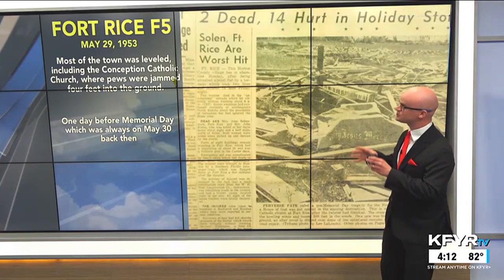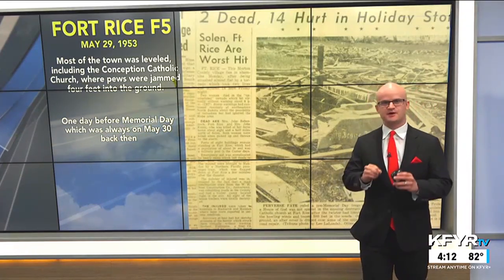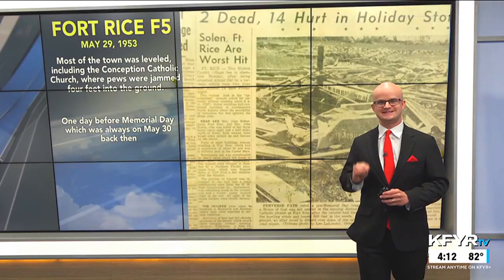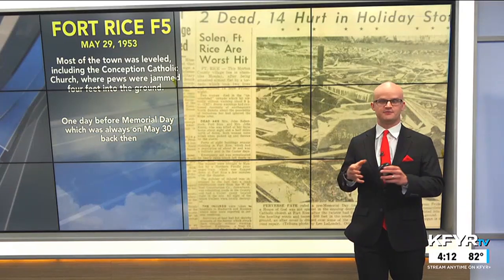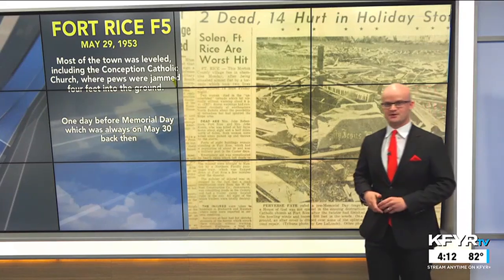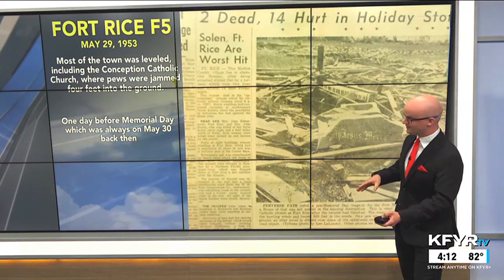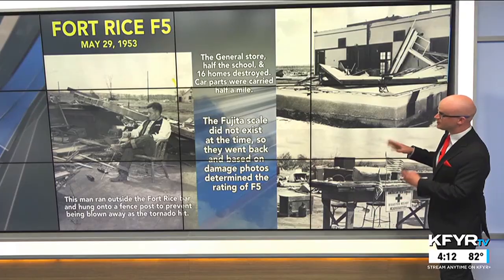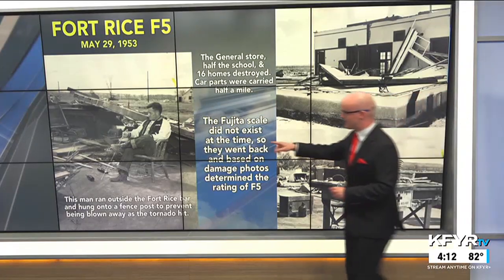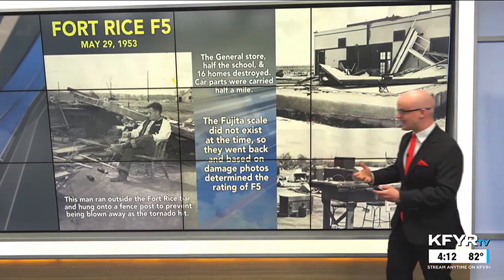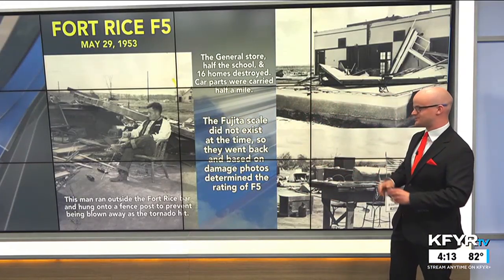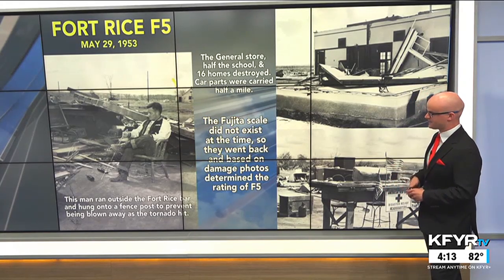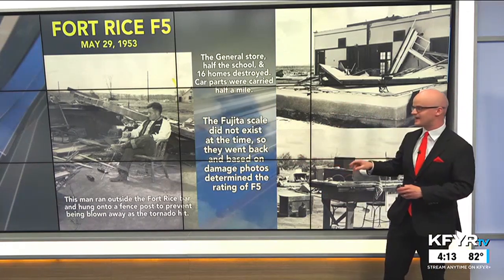Unfortunately, pretty much the entire town of Fort Rice was leveled, including the Conception Catholic Church, where pews were jammed four feet into the ground, showing the strength of the winds. To get that F5 rating, maximum sustained winds had to exceed 260 miles per hour. There are accounts that the only thing remaining of the church was the Blessed Virgin Mary statue. This tornado occurred one day before Memorial Day — May 30th at the time. The general store, half the school, and 16 homes were destroyed; car parts were carried half a mile. One man photographed in the Tribune ran outside the Fort Rice bar and hung onto a fence post to avoid being blown away.